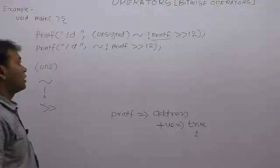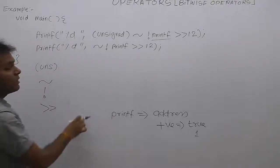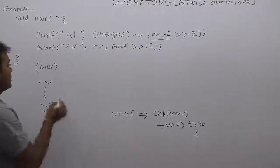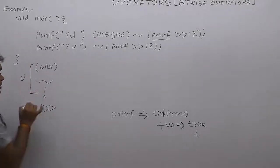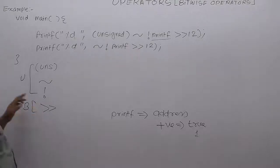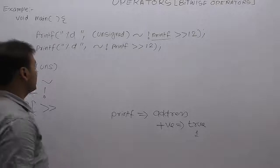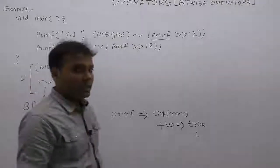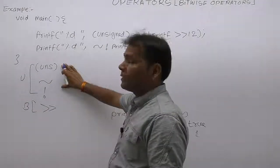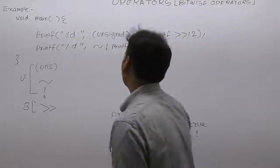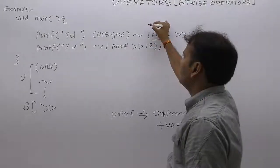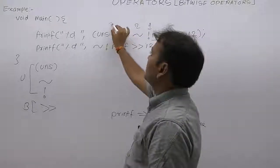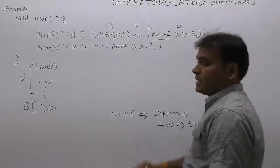Before solving this expression, check the highest priority operator. The first three operators — typecast, ones complement, and NOT — are unary operators, and this last one is a binary operator. Unary operators have higher priority over binary operators. Among the three unary operators, priority is exactly the same, so we apply the associativity rule: from right to left. First is NOT, second is complement, third is type casting, then right shift.